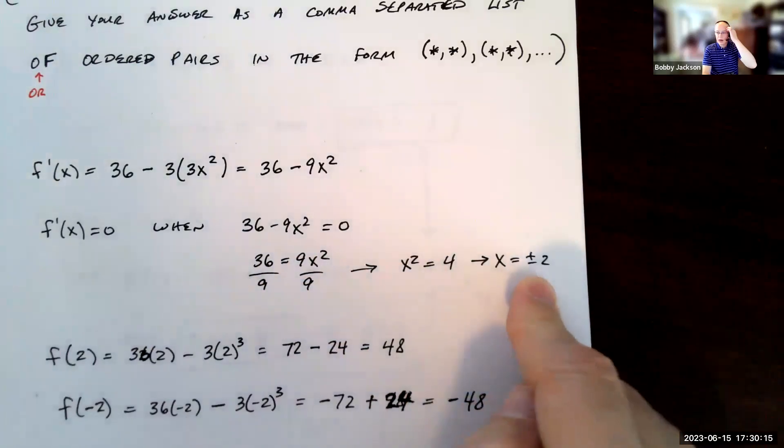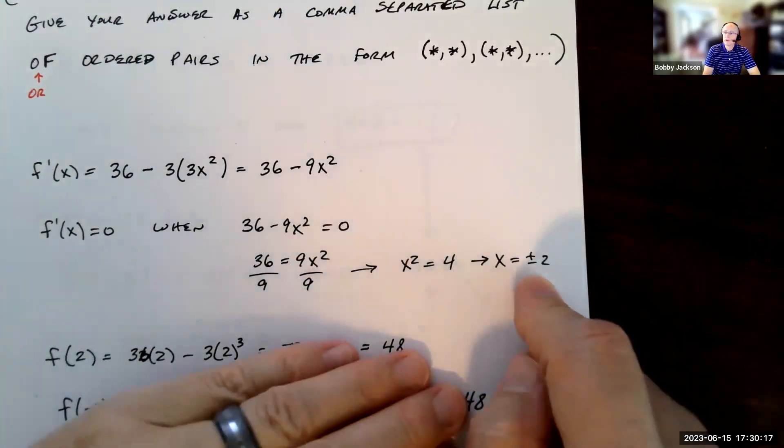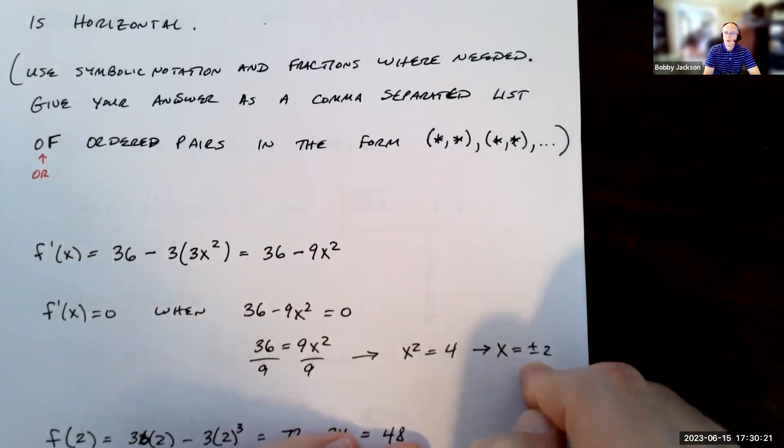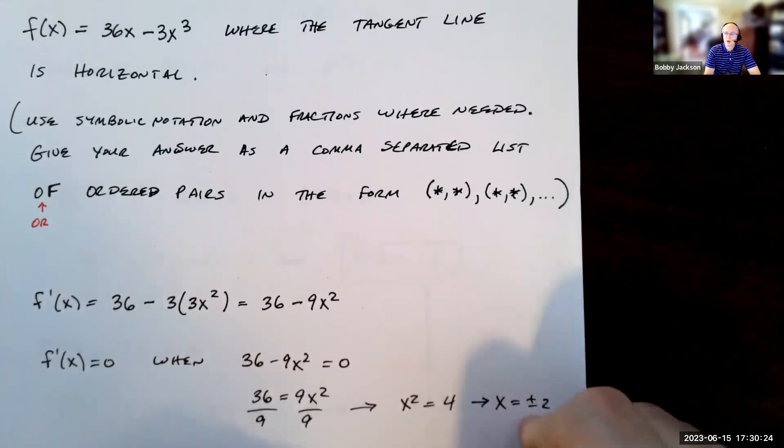Remember, I have to include both the positive and negative square roots. So plus or minus 2. So there's two locations where we have horizontal tangent lines.